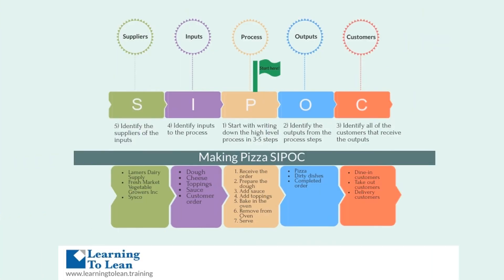One tool that helps us to illustrate a process at a high level is a SIPOC, which stands for suppliers, inputs, processes, outputs, and customers. In order to create a SIPOC and be successful in your project, you need to understand the scope of the process that you're looking to improve. Where does your process begin and where does it end? Remember, we're not trying to boil the ocean here. A good rule of thumb is that if you can't describe your process at a high level in five to seven steps, then you may have scoped the process too large. A SIPOC helps us to describe our process at a high level, identifying the outputs, customers, inputs, and suppliers.